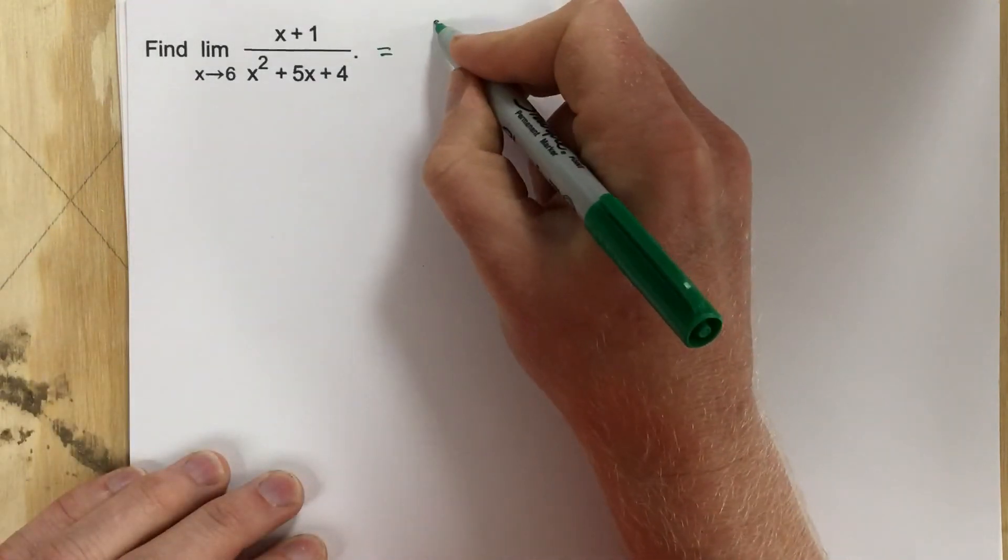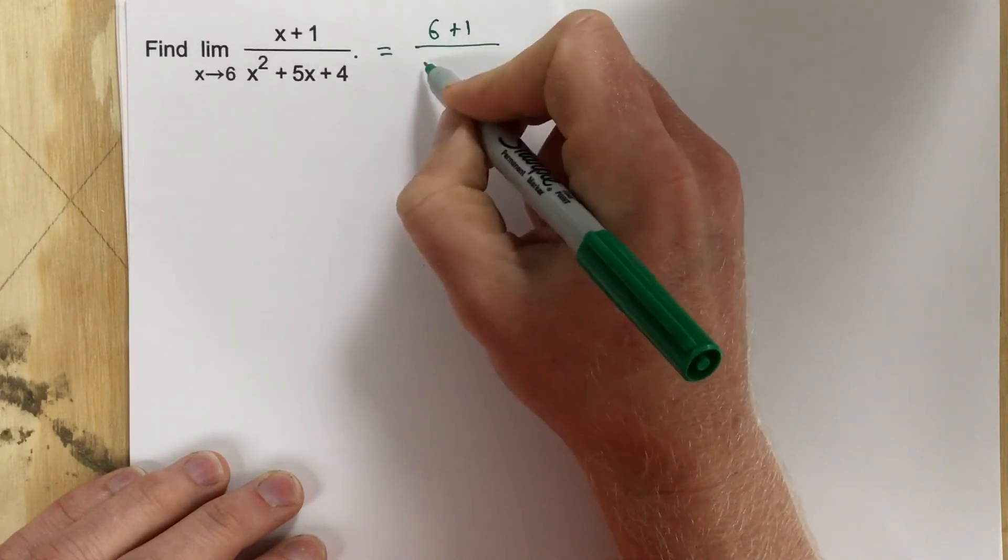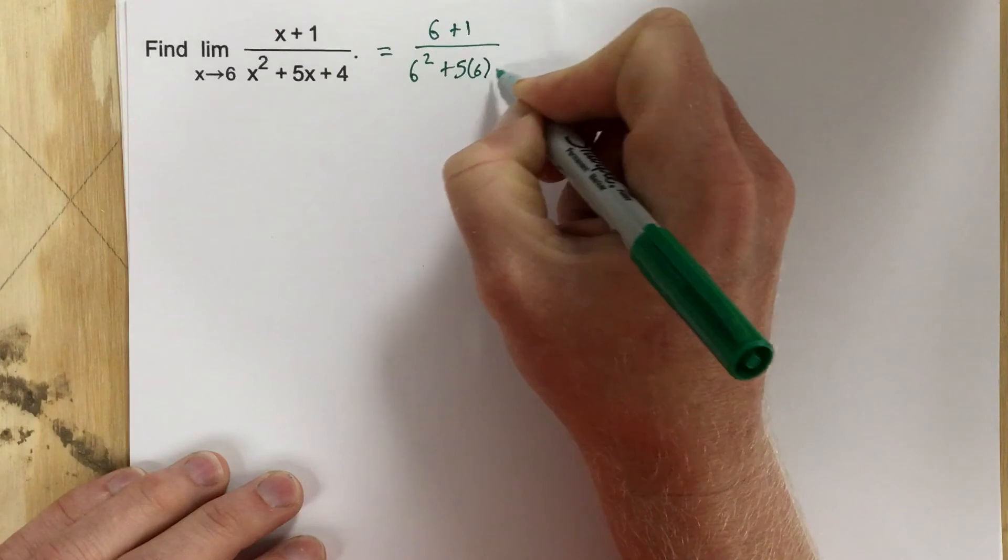If it's defined there, we don't have to do anything but plug it in. So I'm going to plug in 6 for x, and then on the bottom I'll plug in 6 squared plus 5 times 6 plus 4.